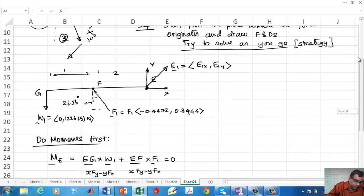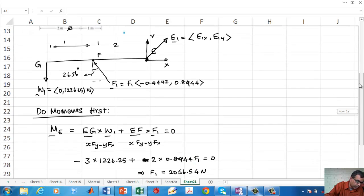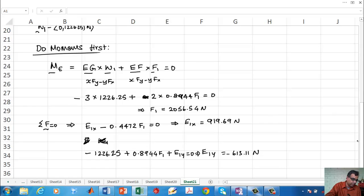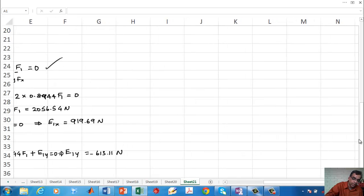So we are done with the first free body diagram. We took this free body diagram and we solved everything out of it. We have done the summation of forces, summation of moments. We have to move on to the next free body diagram. Next free body diagram is going to be for the vertical bar, because that is the next one that is connected.